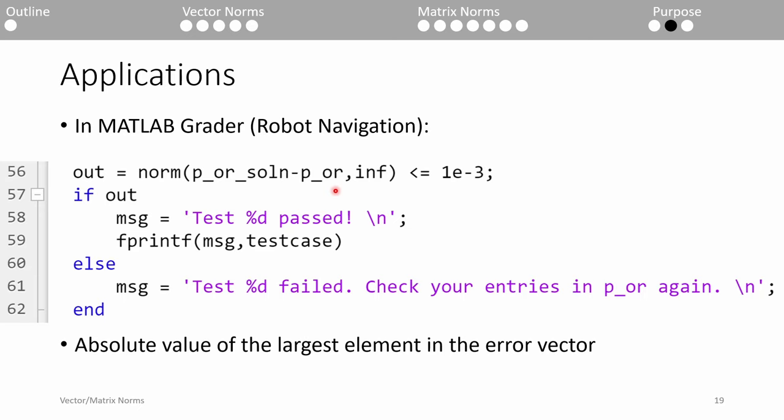If the maximum error within the vector is under the threshold of 1e negative 3, you pass the test. This methodology is generally present in the other p-codes as well.